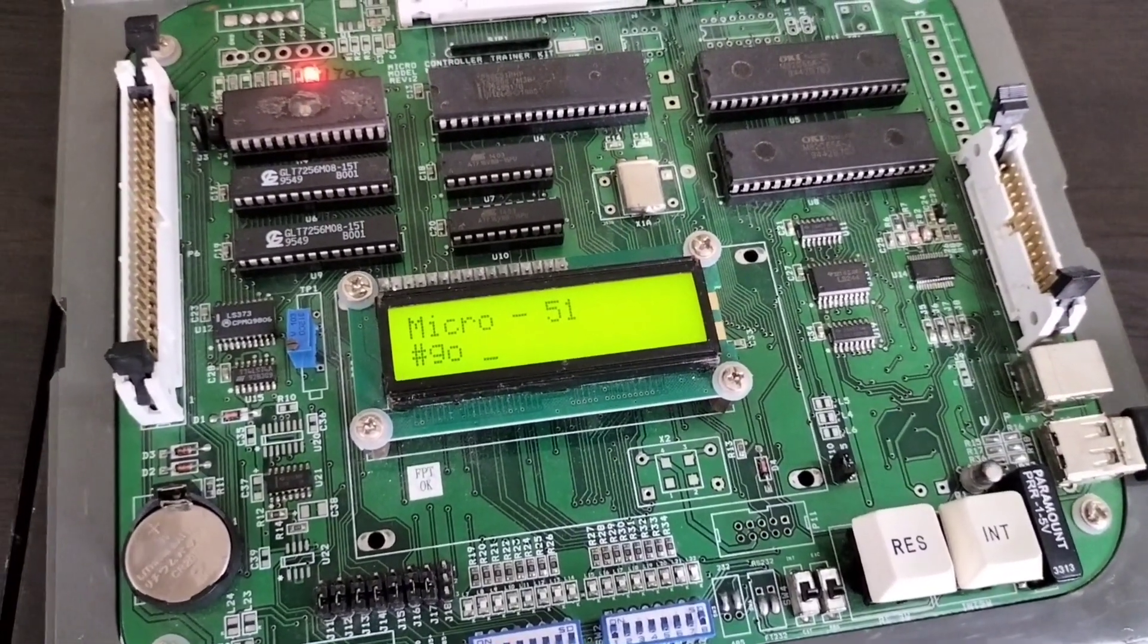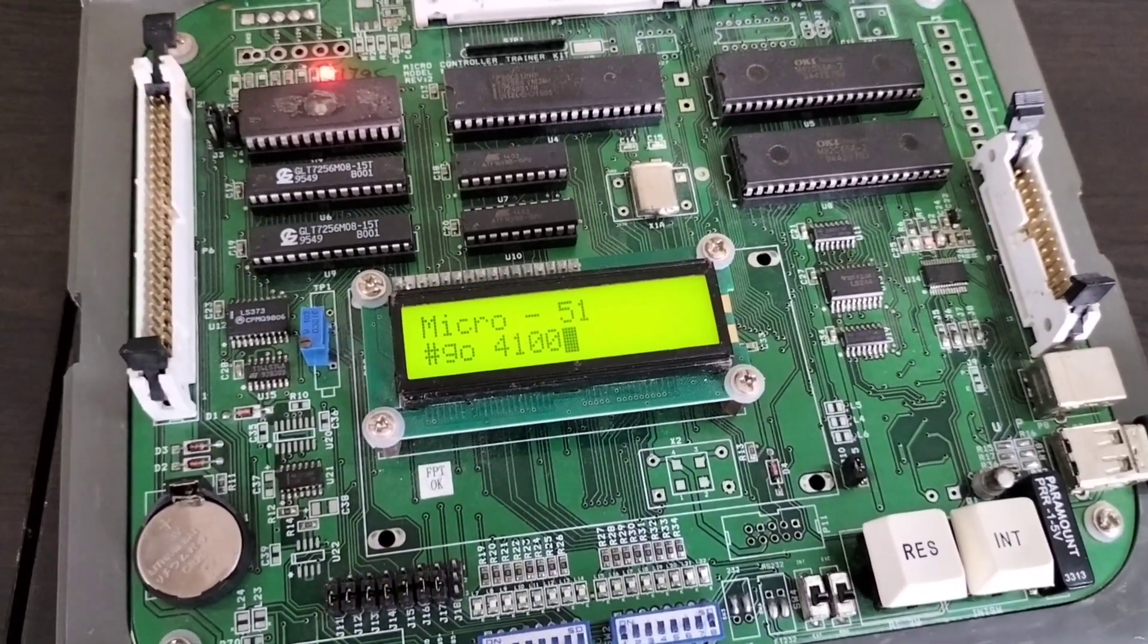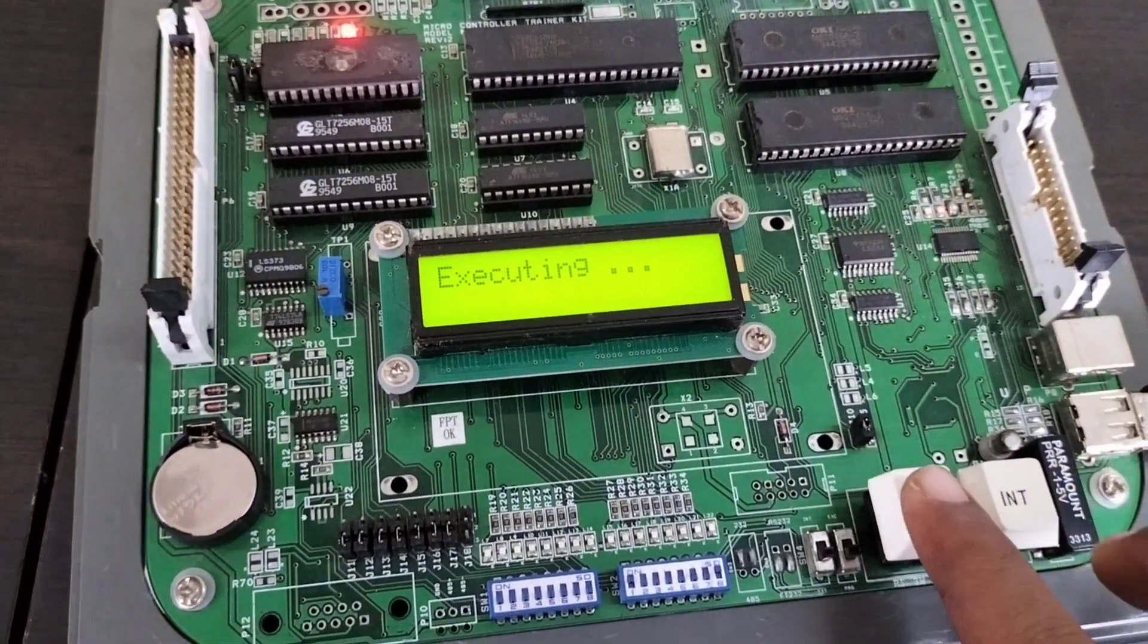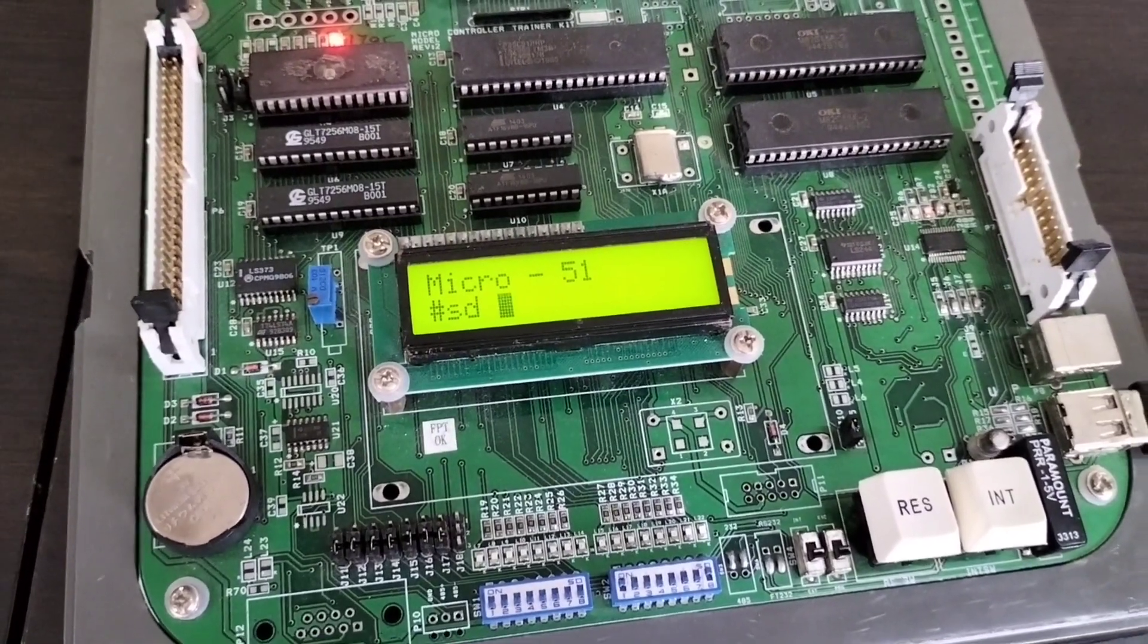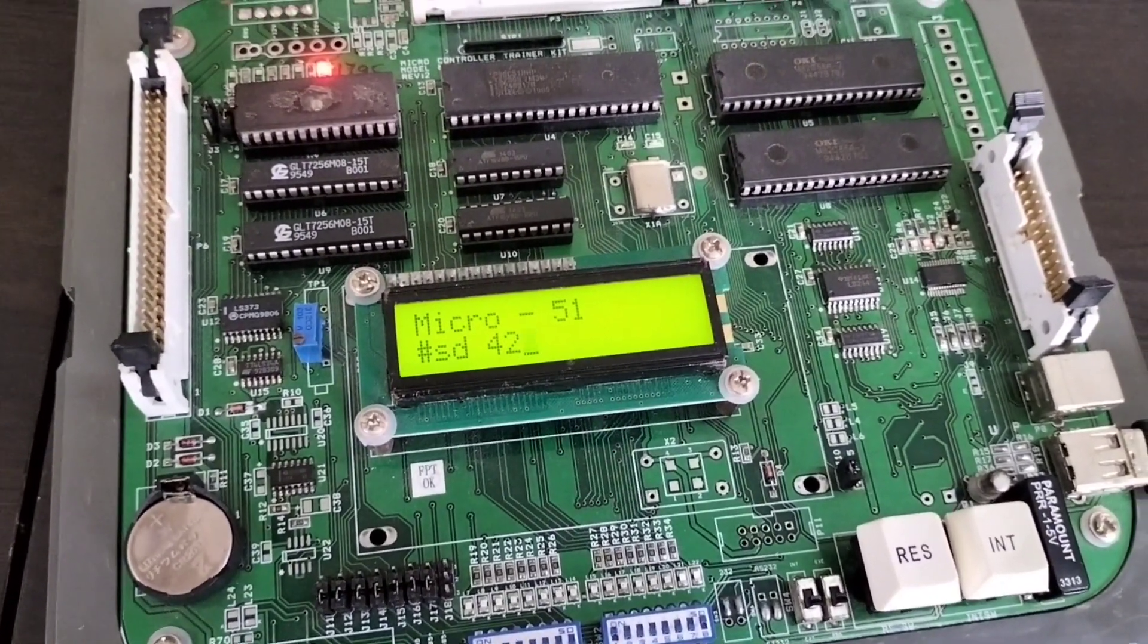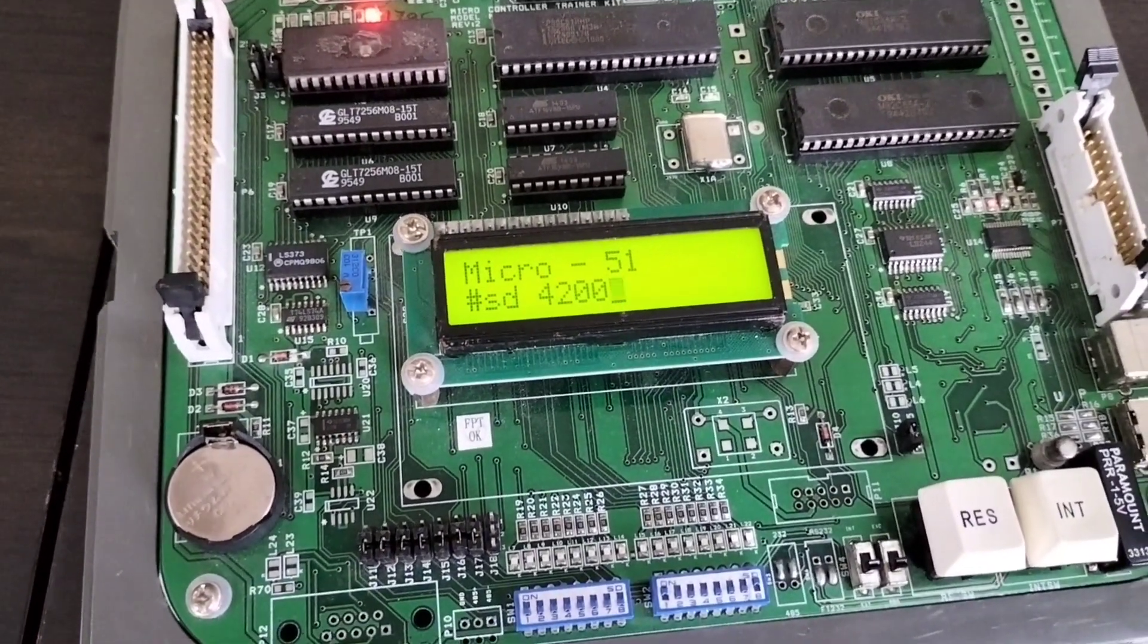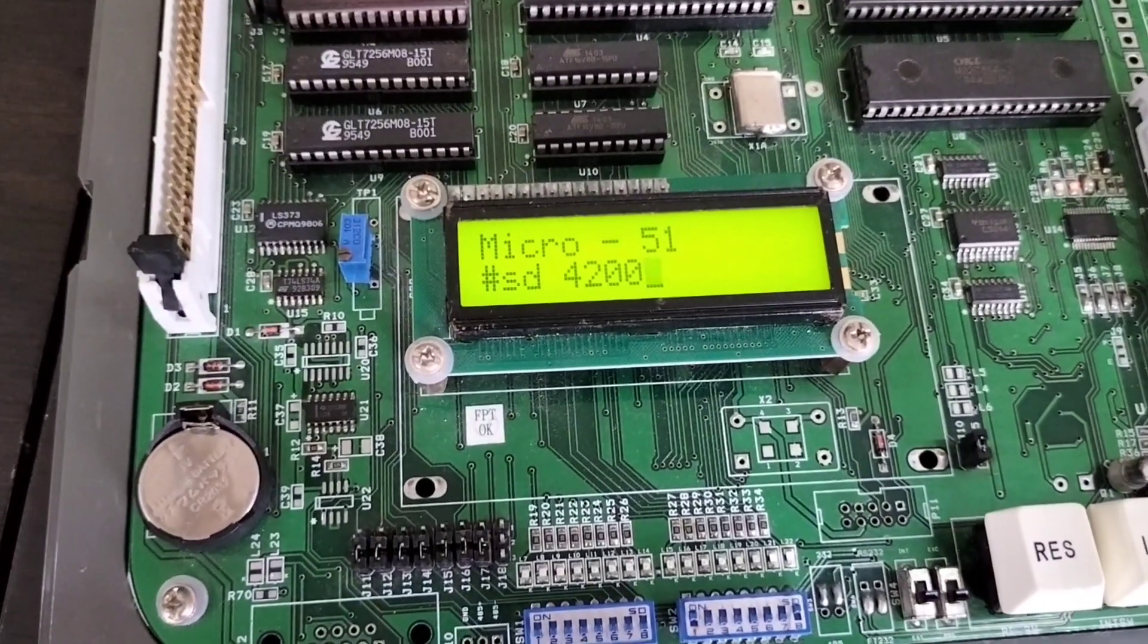Execute the program. Go. Starting address location 4100. Reset. Now we need to see the output. SD space 4200, because that is the memory which is pointed out by DPTR.